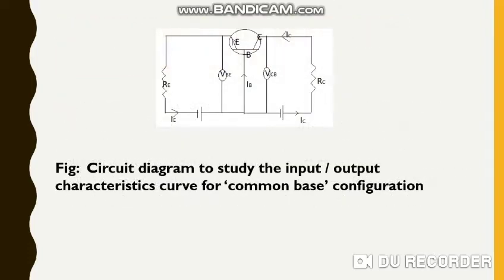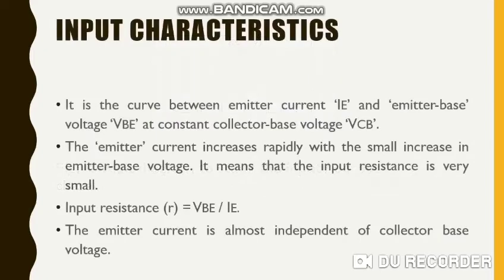Here we have the circuit diagram which helps us study the input and output characteristics curve for common base configuration. I'll come back to this diagram later on. Here are the input characteristics. It is a curve between emitter current IE and emitter base voltage VBE, at constant collector base voltage VCB, which is from the output side.